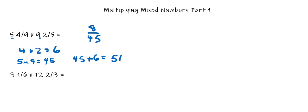45 plus 6 is 51. And that will be the whole number part of your answer. So 5 and 4/9 times 9 and 2/5 will give you 51 and 8/45.